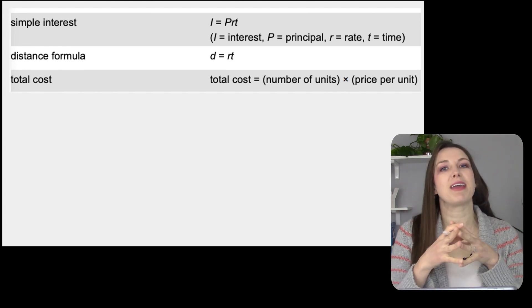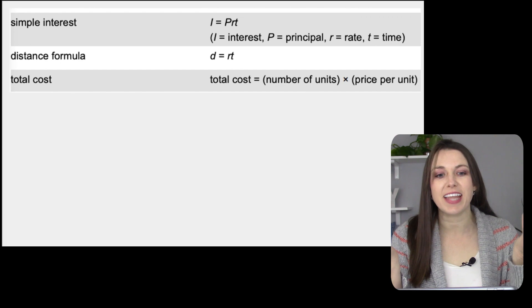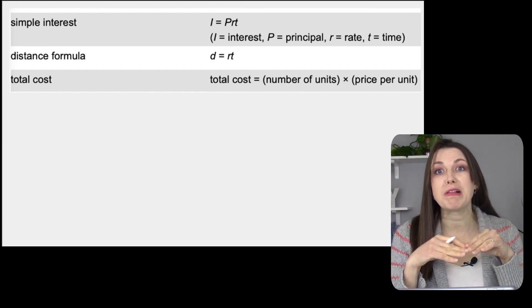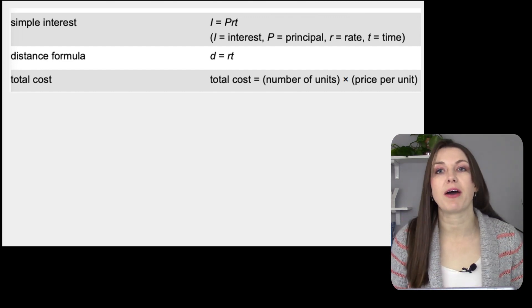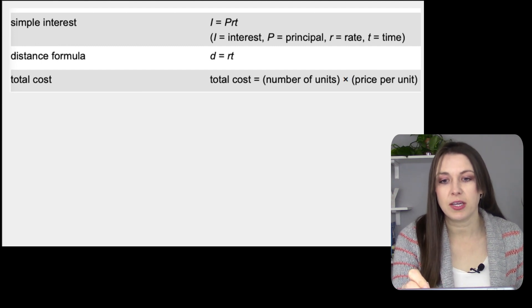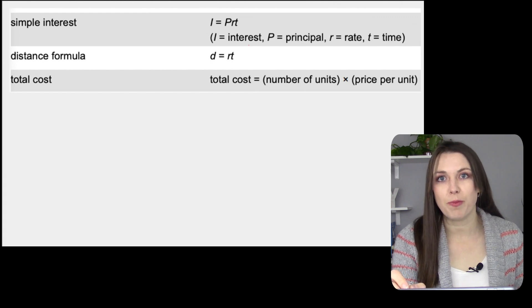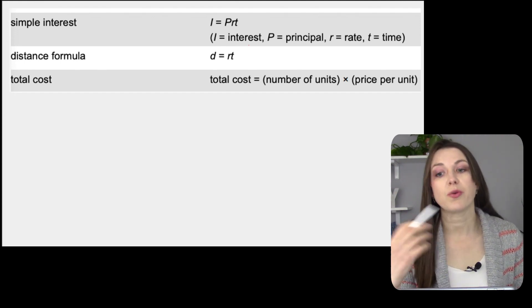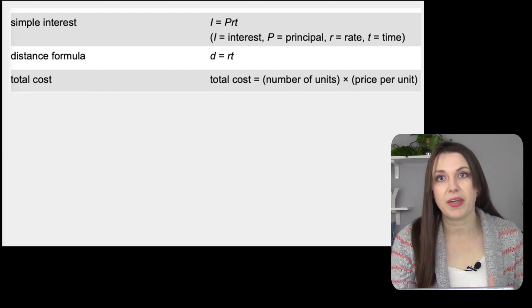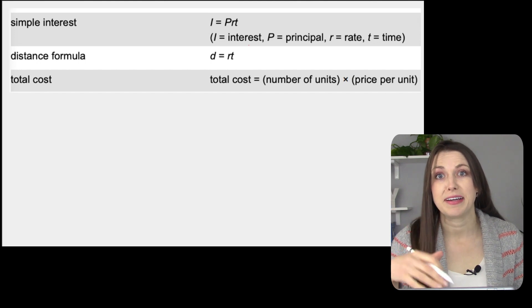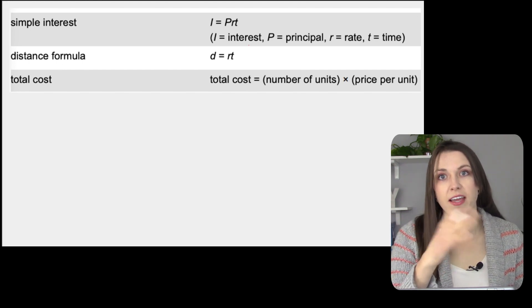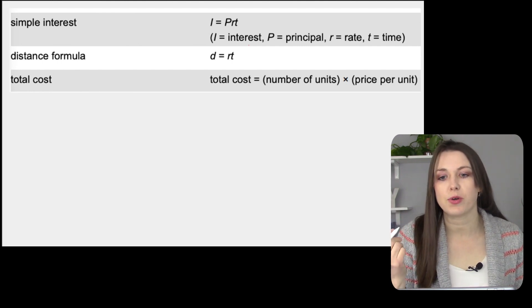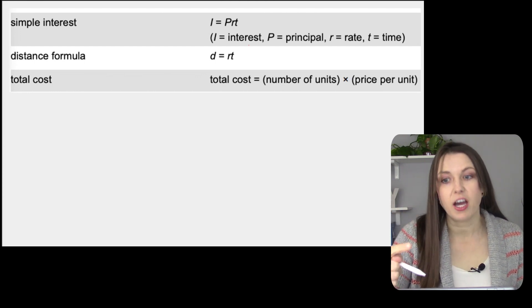Interest! This is what can make people millionaires — but on the flip side, it can put people in major debt through compound interest. Here we're talking about simple interest: I equals P times R times T. I is interest, P is principal — the amount you put in, say $100. R is the rate, maybe 10%. T is the time, how long you keep it in. From that you can figure out the interest earned, or solve for rate or time.